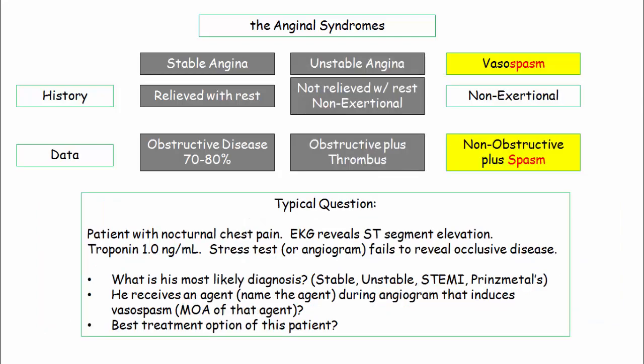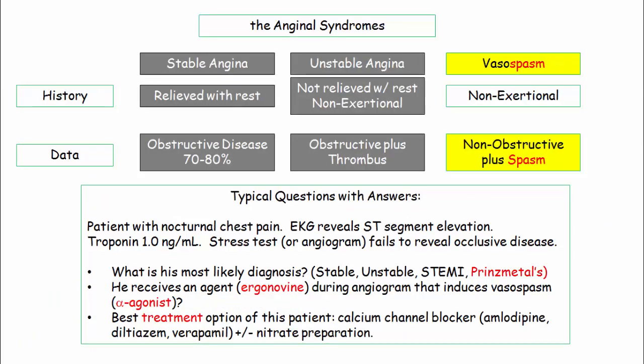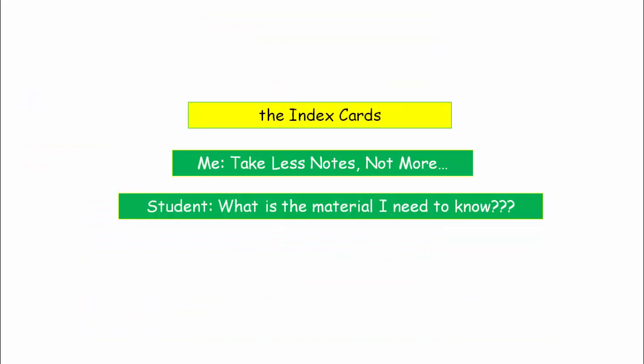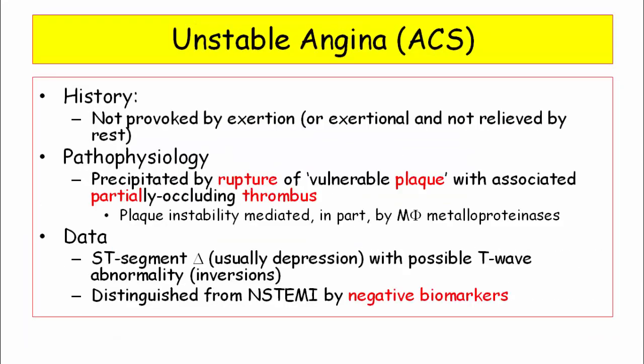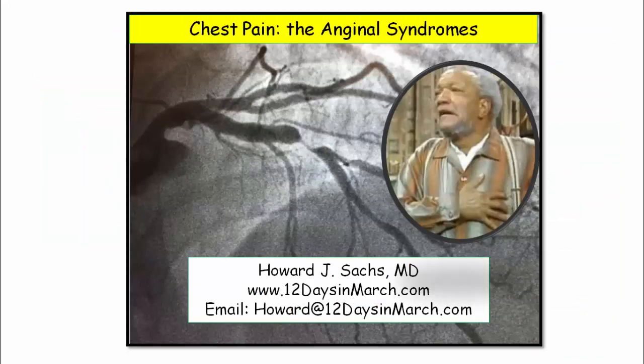For vasospasm, the typical scenario is nocturnal chest pain with abnormal EKG and slightly elevated troponin, but with absence of obstructive disease described — the diagnosis is vasospastic, variant, or Prinzmetal's angina. They can ask about the provocative drug used during testing, its mechanism of action, or the treatment of choice. The anginal syndromes have a very finite curriculum reviewed in this presentation — there is no reason to miss any of these questions. If you have any questions on this or any material covered in 12 Days videos, please email at 12 Days in March. Thank you.